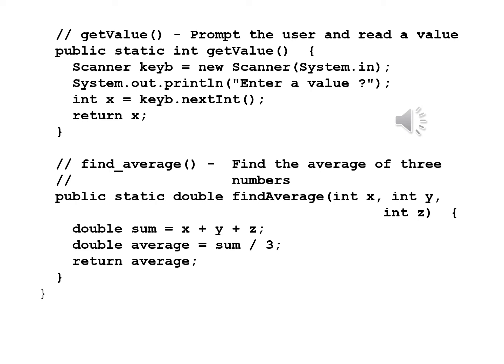Similarly, for findAverage, we have a comment that says find the average of three numbers. Public static double findAverage open parenthesis int x comma int y comma int z comma close parenthesis open brace. Double sum equals x plus y plus z semicolon. Double average equals sum divided by 3 semicolon. Return average semicolon. The fact that the sum is a double allows me to use 3 without a decimal point afterwards, because it will automatically be converted to a double to do the division. I now have a close brace for the method and a close brace for the program.